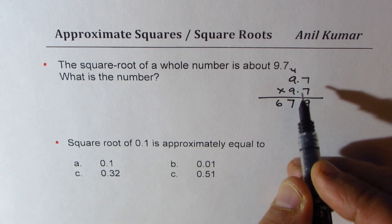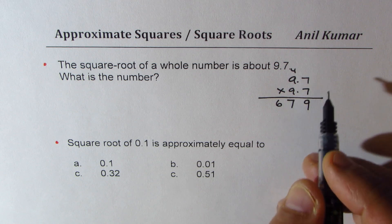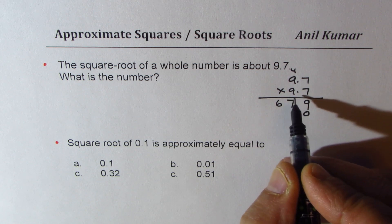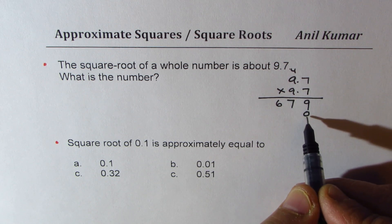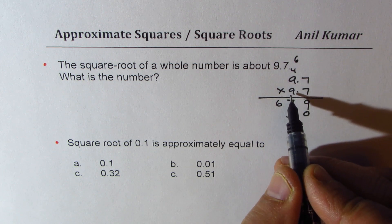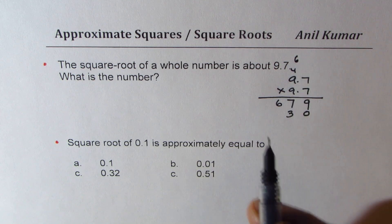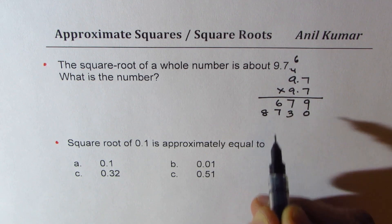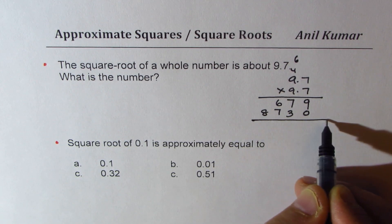Now we'll multiply with 9, which is one place higher, so we'll put 0 here. 9 times 7 is 63, so we get 6 here. 9 times 9 is 81, and 6 gives us 87. So now adding them...